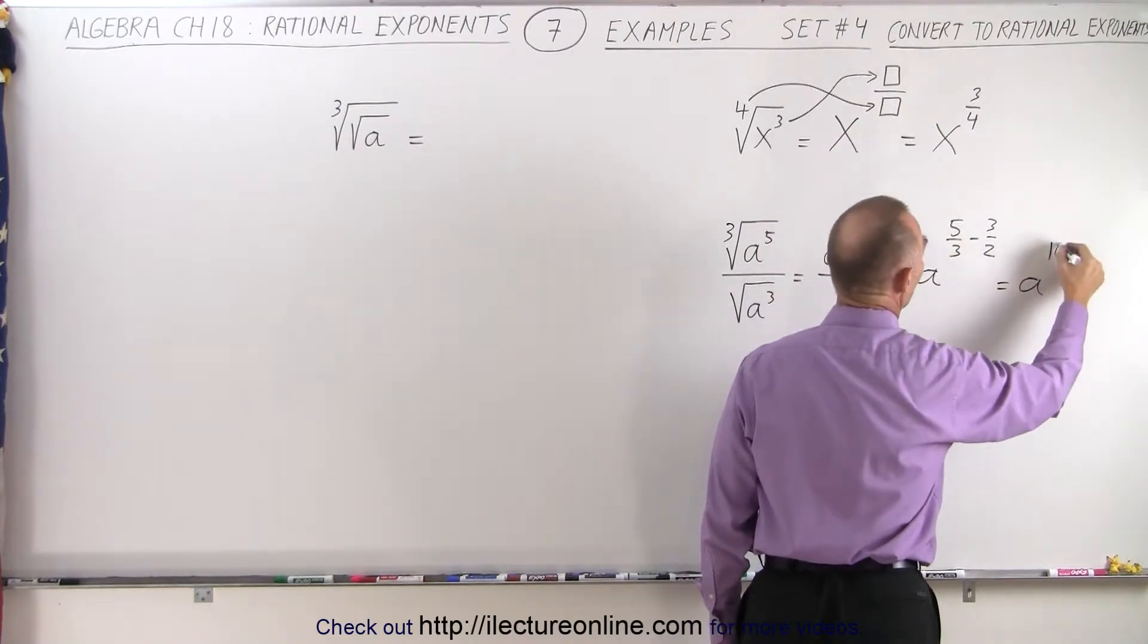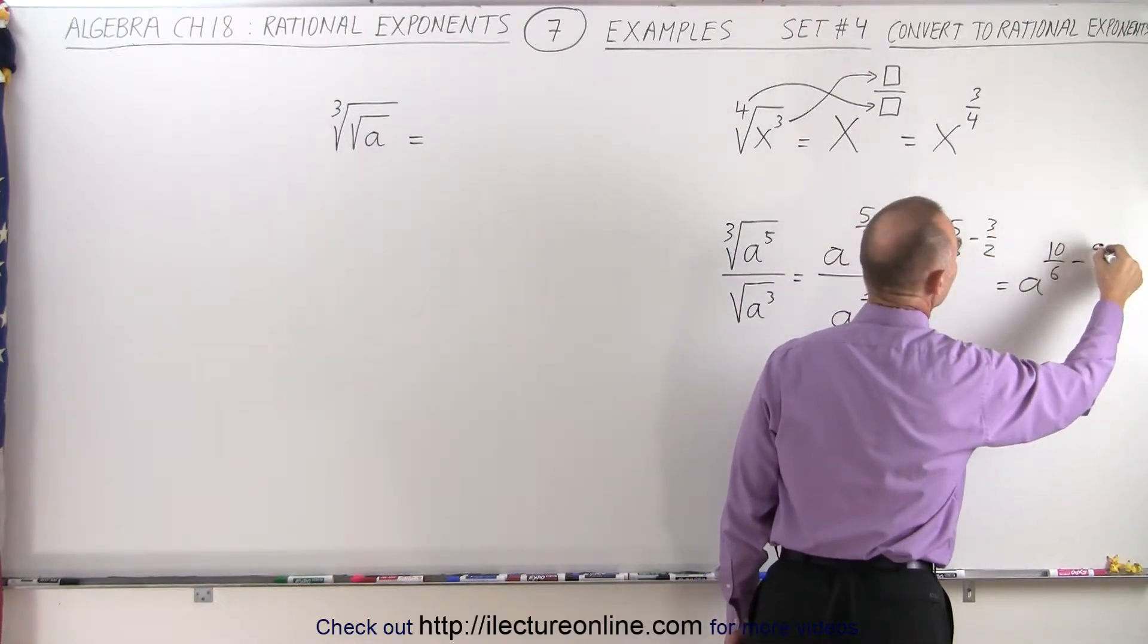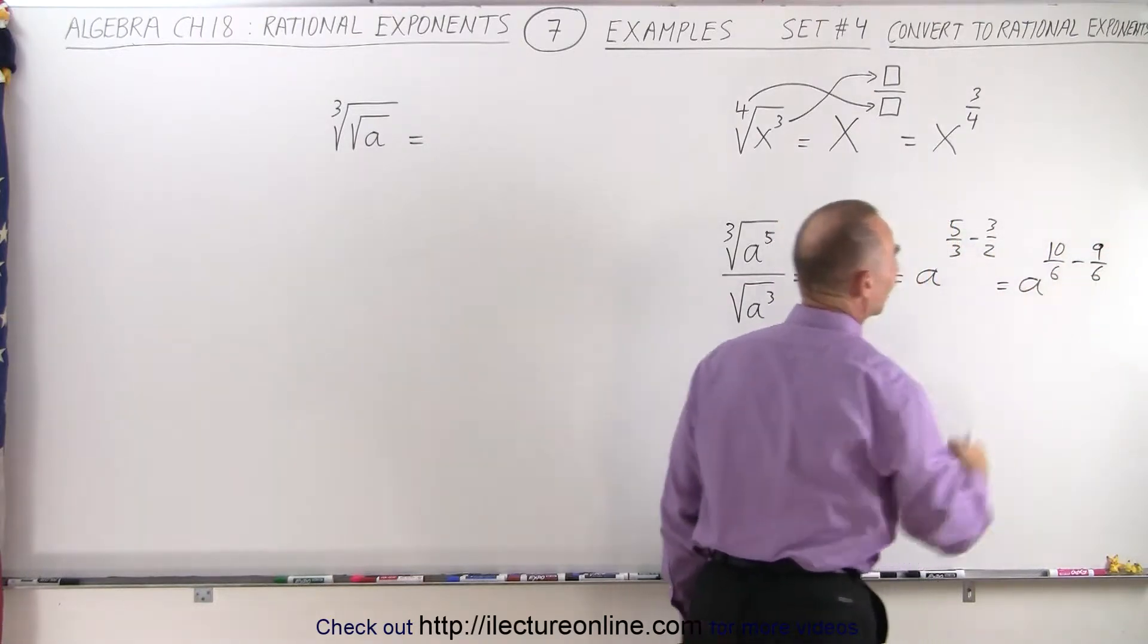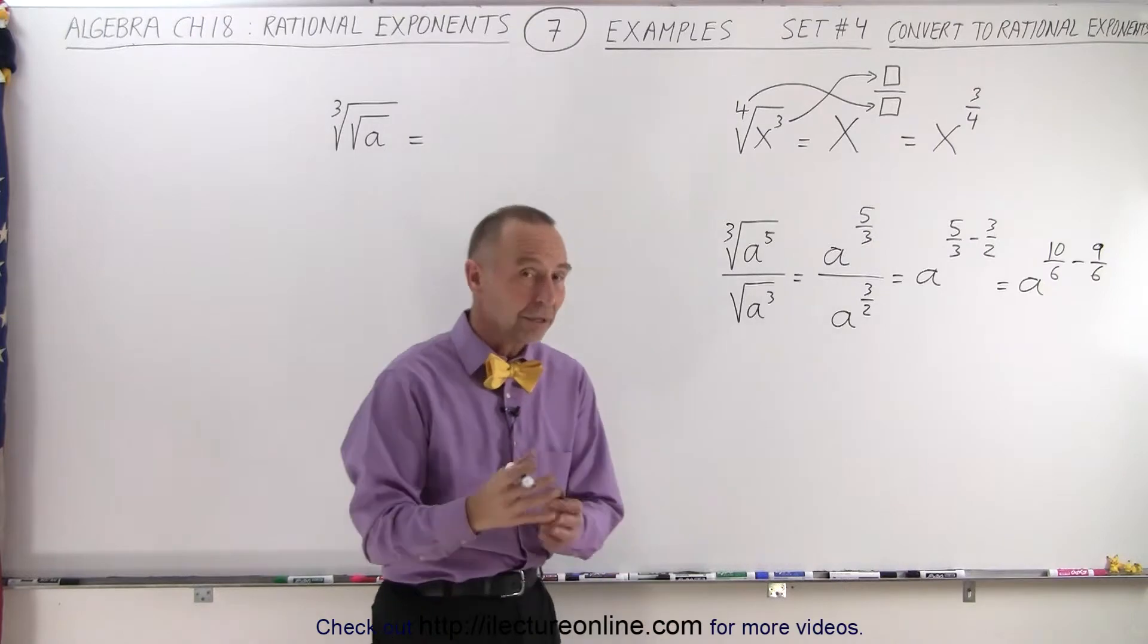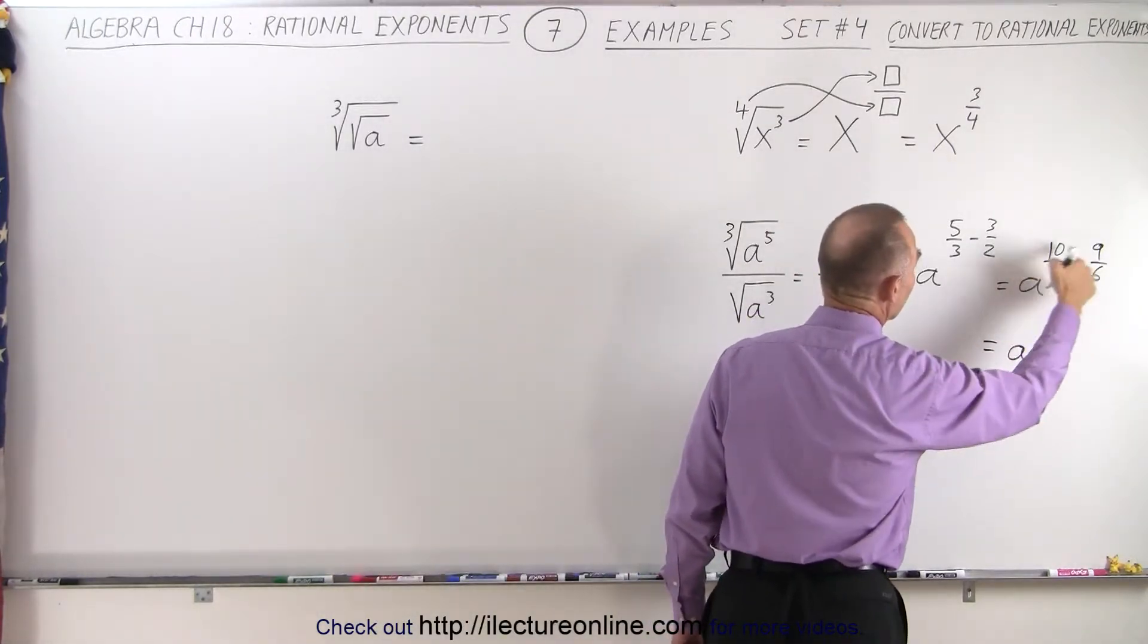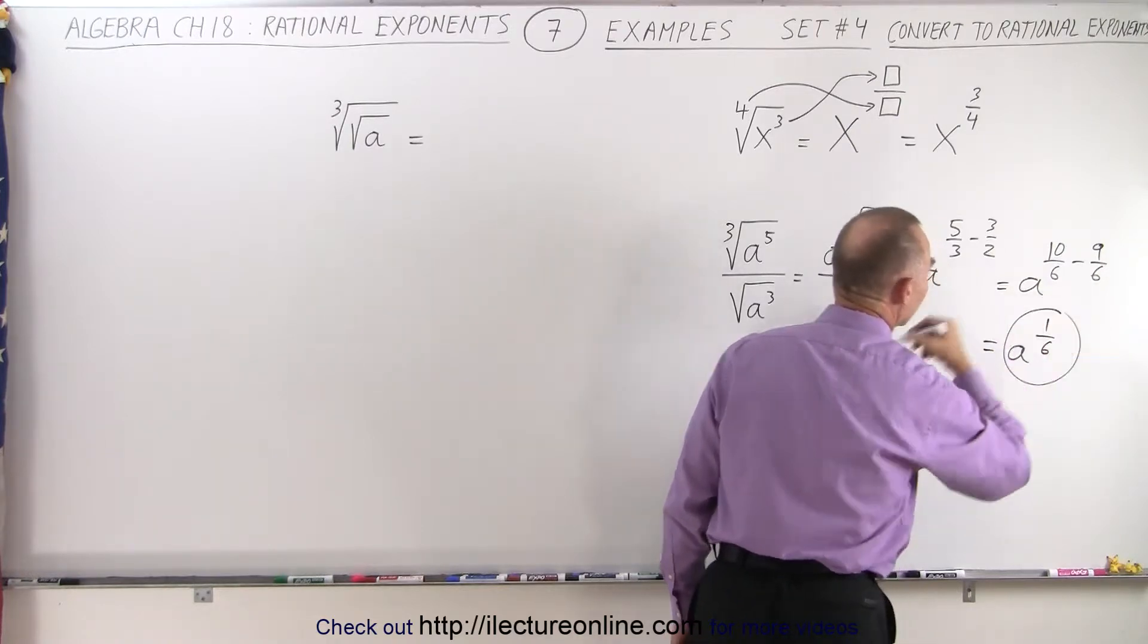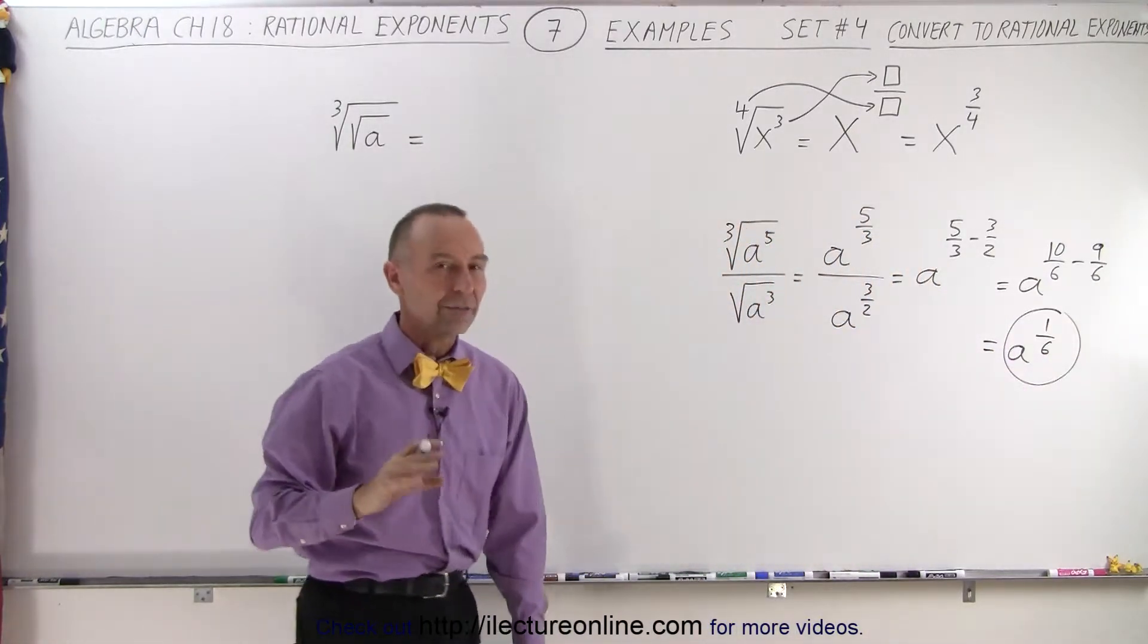That gives us 10 over 6 minus multiply the top and the bottom by 3. We get 9 over 6. Now we have our denominators the same. And now we can subtract the exponents. So this is equal to a to the 10 minus 9, which is 1 over 6 power. And that would be the final simplified result of that expression.